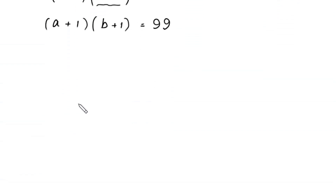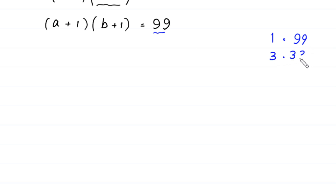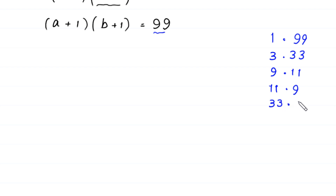We have two factors on the left side. The number 99 can be factorized as: 1 times 99, 3 times 33, 9 times 11, 11 times 9, 33 times 3, and 99 times 1.